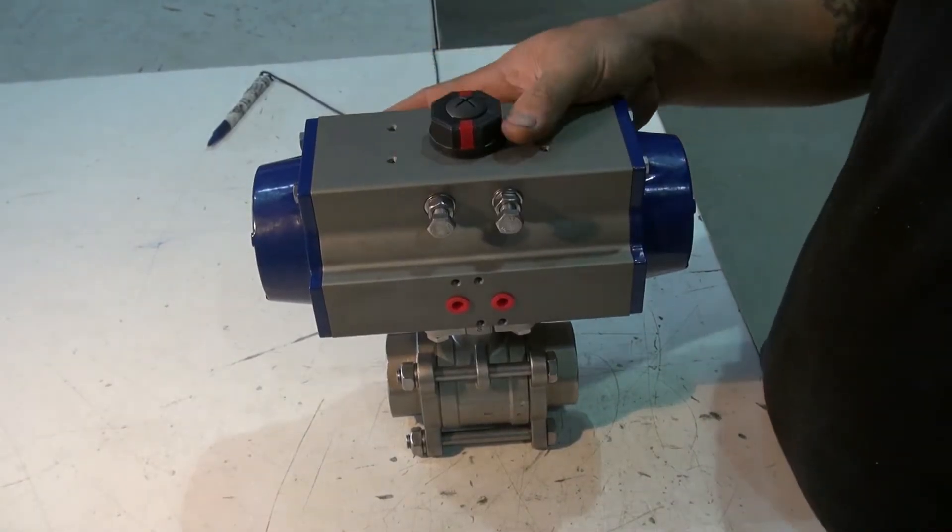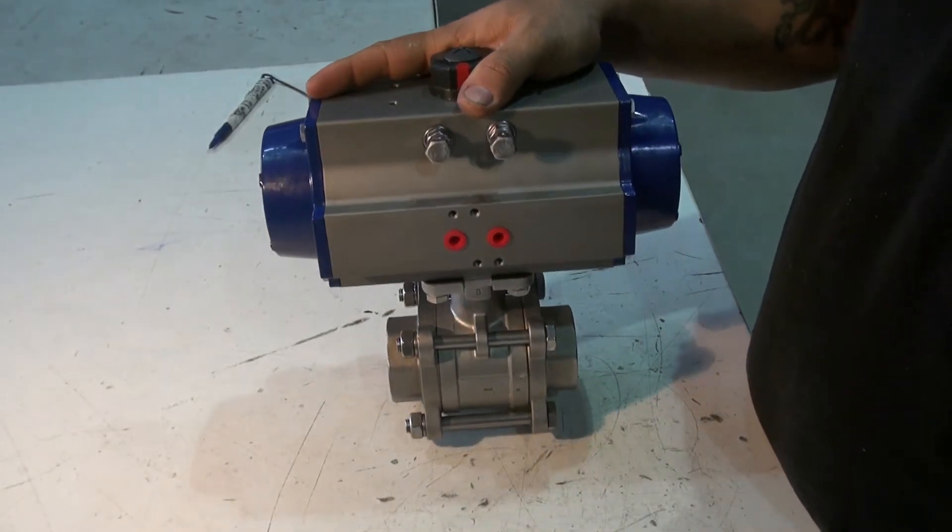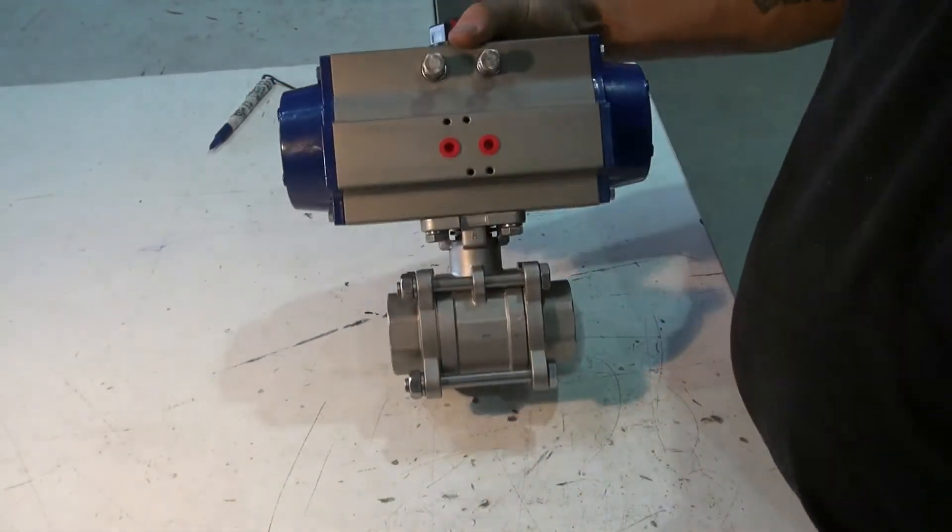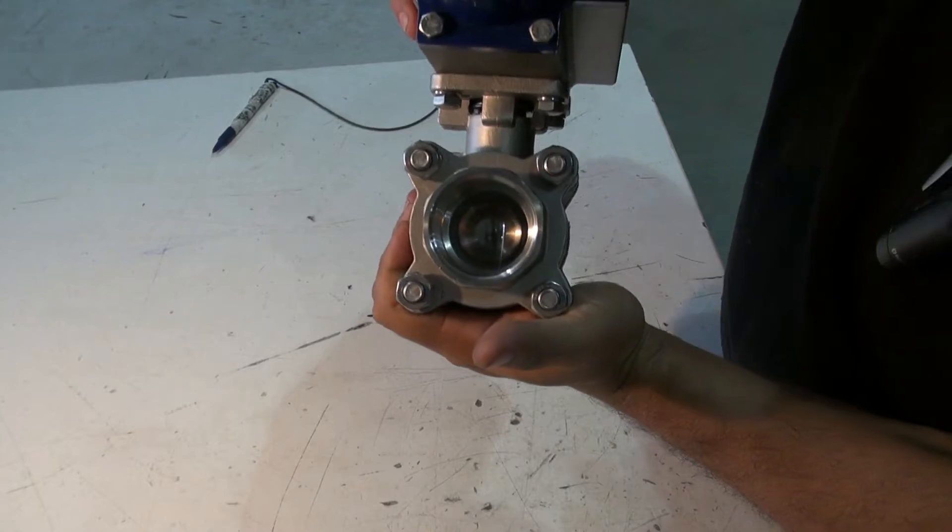How to change a 2 inch spring return actuated ball valve from normally closed to normally open. I have the valve here in the normally closed position.